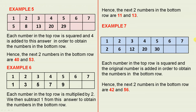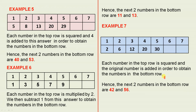Example 7: each number in the top row is squared and the original number is added in order to obtain the numbers in the bottom row. So 1 squared plus 1 gives you 2, 2 squared plus 2 gives you 6, 3 squared plus 3 is 12, 4 squared plus 4 is 20, 5 squared plus 5 is 30. So 6 squared plus 6 is 42 and 7 squared plus 7 is 56. The next two numbers are 42 and 56. Now you can see, if you know your times tables very well and you study the tables carefully, these sums are not that difficult.